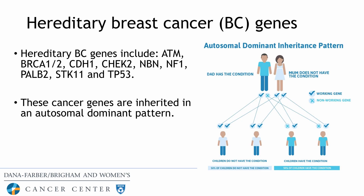Today in 2019, there are about 10 hereditary breast cancer genes: ATM, BRCA1, BRCA2, CDH1, CHEK2, NBN, NF1, PALB2, STK11, and TP53. These cancer genes are inherited in an autosomal dominant pattern, meaning if an individual's mother or father has a hereditary cancer gene, the individual has a 50% chance of having that gene too.